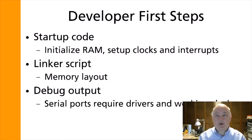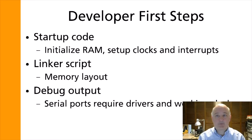To make starting with a new embedded platform easier, developers will benefit from extra support in the C library. First, the processor, memory, and library need to be initialized. Second, the linker needs to know how to lay out the application in ROM and RAM — this includes hardware-specific information, processor setup instructions, and library initialization code. Finally, providing debug output using semi-hosting or other architecture-specific mechanisms lets the developer see debugging information before clocks and serial port drivers are working. With these three tools, a new SOC can be brought up using only the memory layout of the device.